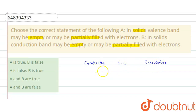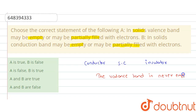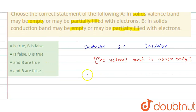In all three cases — whether it is a conductor, a semiconductor, or an insulator — the valence band is never empty. So we can say the first statement, which states that in solids the valence band may be empty, is a false statement.